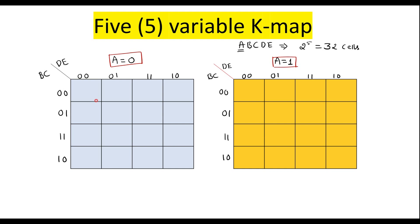The cell numbers are the same as for a 4-variable Kmap. Starting from 0, 1, 2, 3 in the first row, then 4, 5, 6, 7, then 8, 9, 10, 11, then 12, 13, 14, and this cell number is 15.